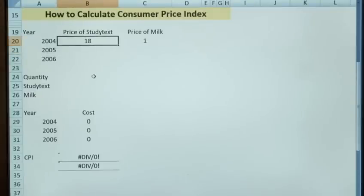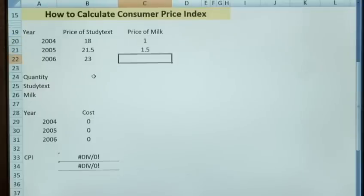So if in 2004 the study text was £18 and the price of two litres of milk was a pound, we then want to track this through. So in 2005 the same study text from the same area, same shop was £21.50 and by 2006 this would become £23. In terms of milk, milk had gone from £1 in 2004 to £1.50 in 2005 and £2 in 2006.